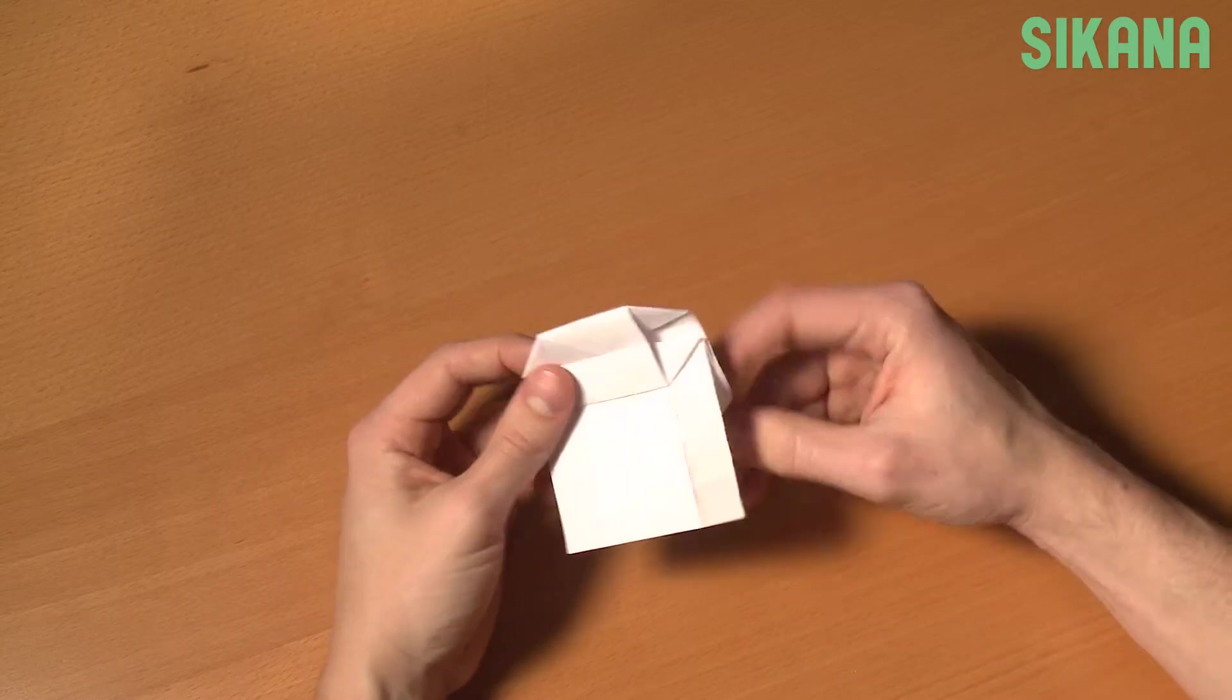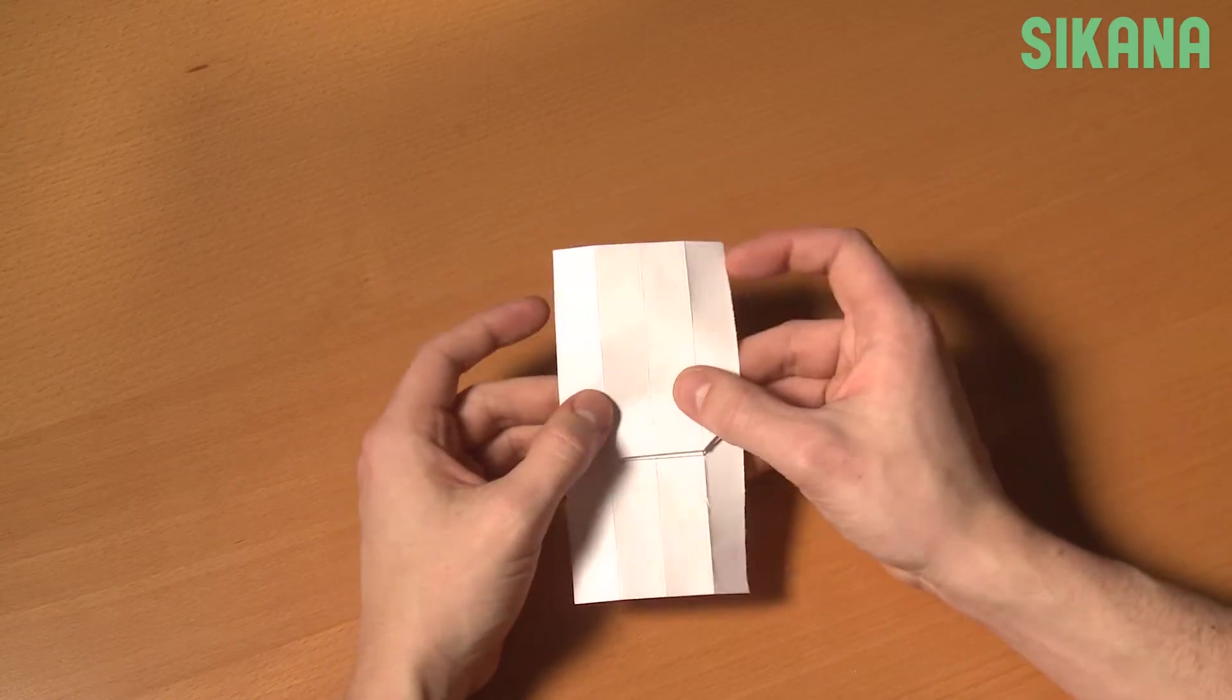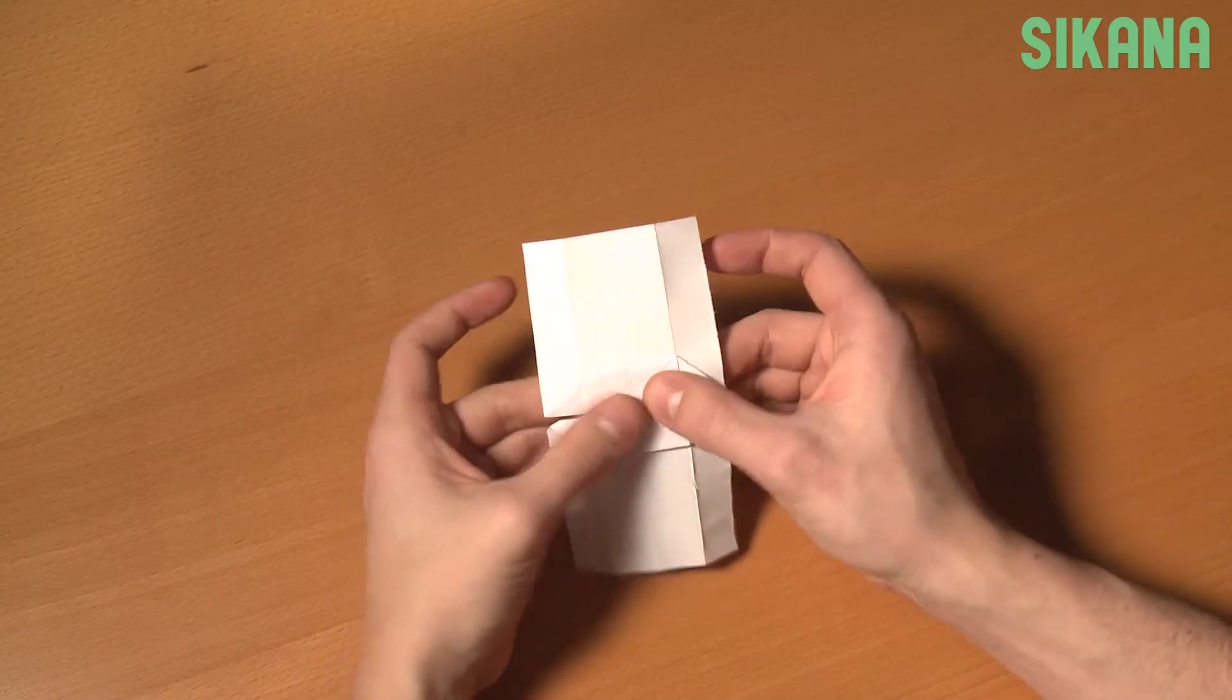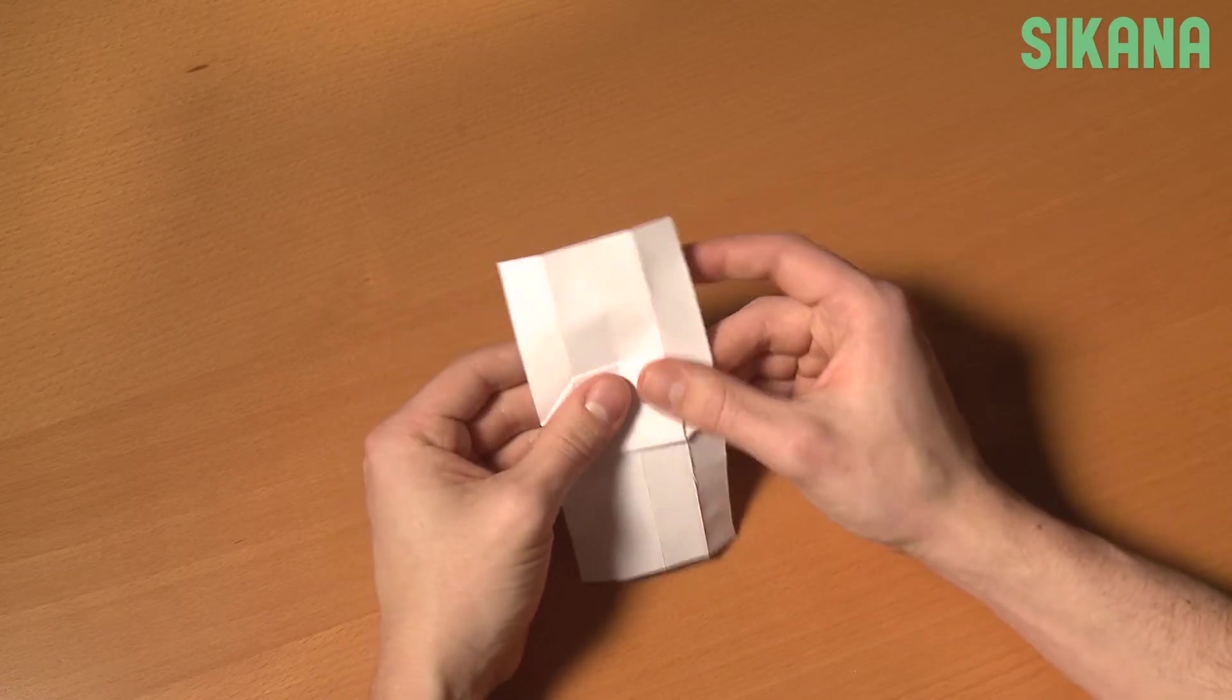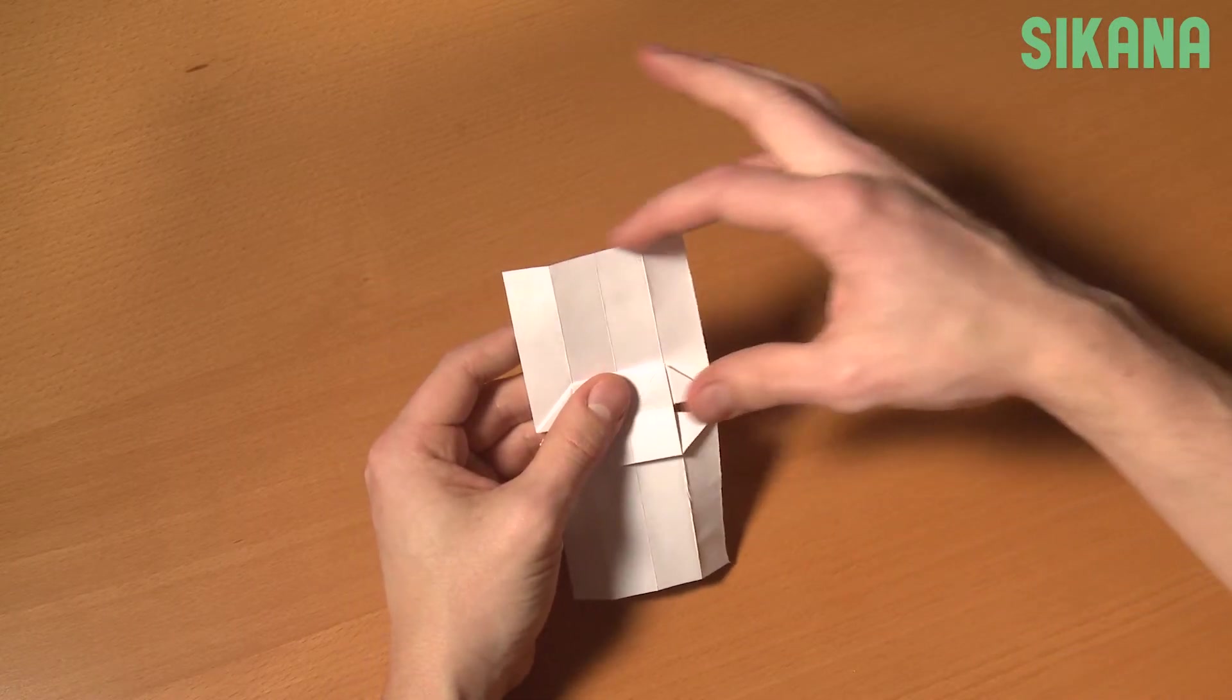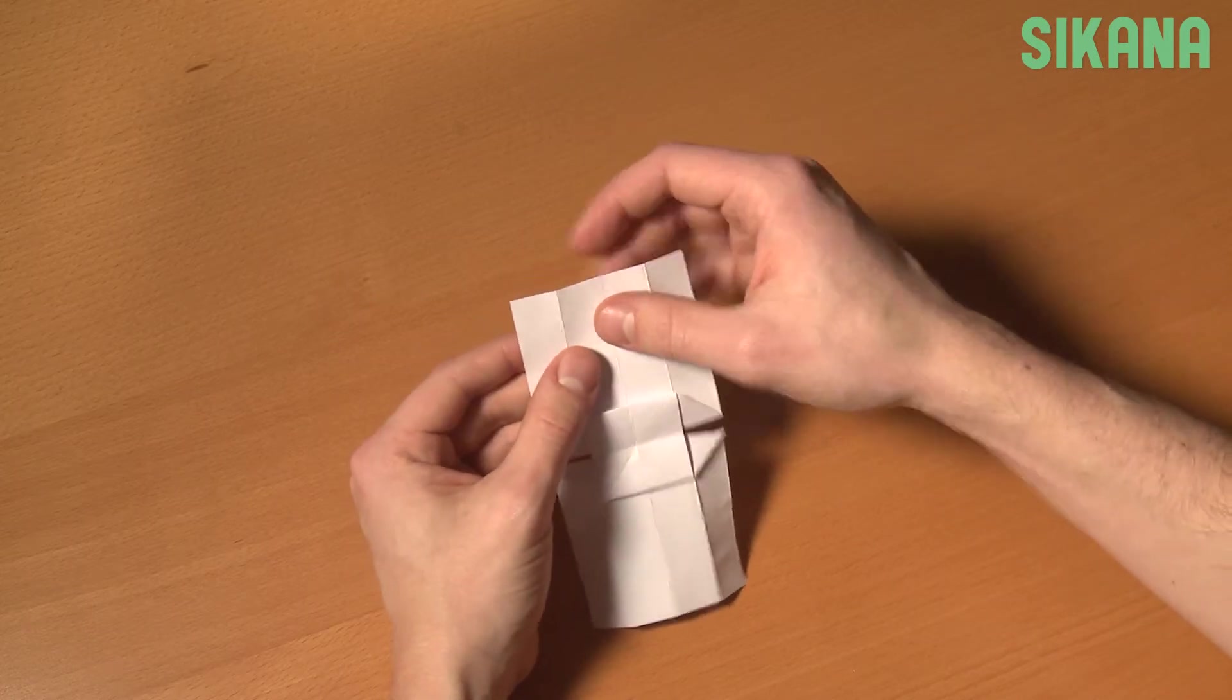Lift this part of the top. There should be a square in the center. Fold this point on this line to make a mark.